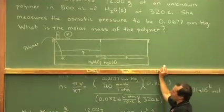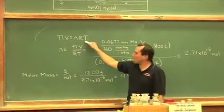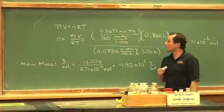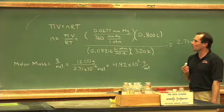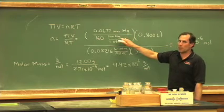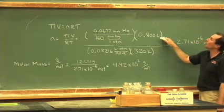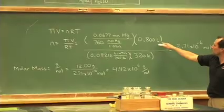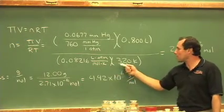I showed my work. We're going to use the ideal osmotic pressure equation. π V is equal to nRT. Rearrange for amount and number of moles. This is the pressure in millimeters of mercury. Divide by 760 millimeters of mercury per atmosphere. The volume, I took the liberty here of changing 800 mils into 0.8 liters. Ideal gas law constant and the temperature in Kelvin.